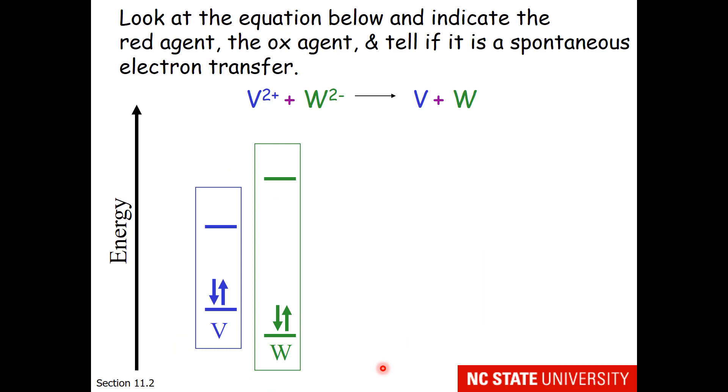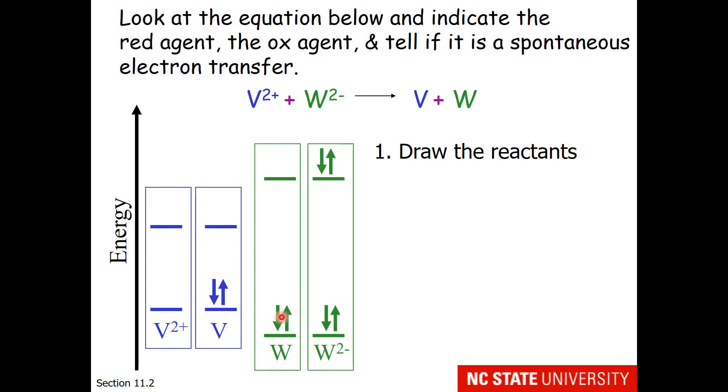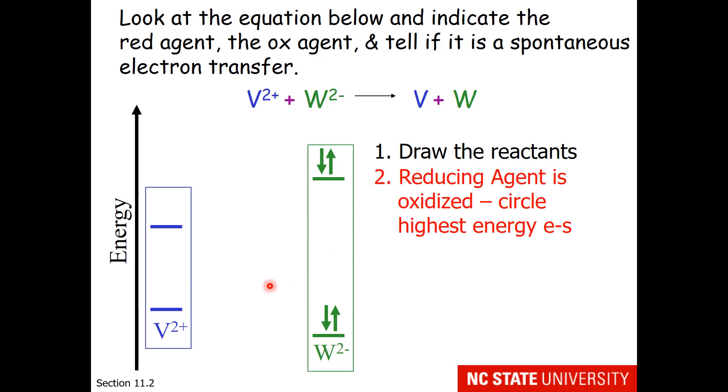Now here is a bit more complex question. We want to look at the equation below and indicate the reducing agent, the oxidizing agent, and tell if it is a spontaneous electron transfer. So I have V2 plus plus W2 minus going to V and W. My first step to answer this question is to draw the actual reactants. I have V and W here, but what I want to react is V2 plus and W2 minus. So for V2 plus, I will take away two electrons, and for W2 minus, I will add two electrons, which I must add to this orbital. So now I have what is actually reacting.